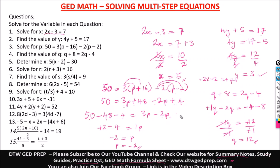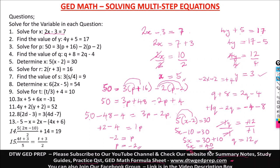Number 5: 5(x minus 2) equals 30. Distribute: 5 times x is 5x, and 5 times negative 2 is negative 10, equal to 30. Take negative 10 to the other side — it becomes positive 10. So 5x equals 30 plus 10, which is 40. Divide both sides by 5, and x equals 40 divided by 5, which is 8.